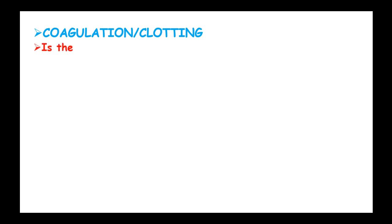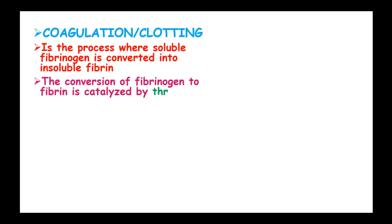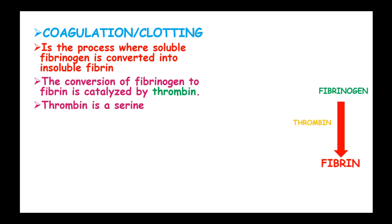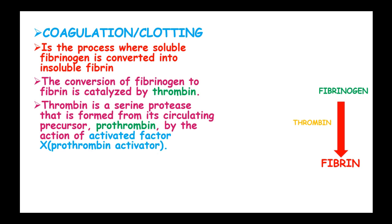Coagulation, also known as clotting, is the process where soluble fibrinogen is converted to insoluble fibrin. The conversion of fibrinogen to fibrin is catalyzed by thrombin. Thrombin is a serine protease that is formed from its circulating precursor known as prothrombin, by the action of activated factor X, or prothrombin activator.